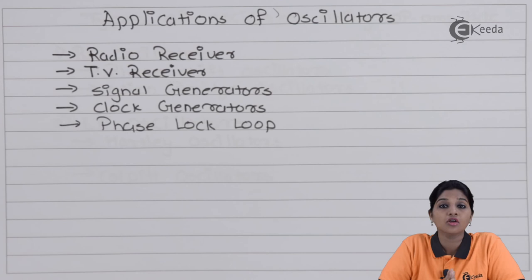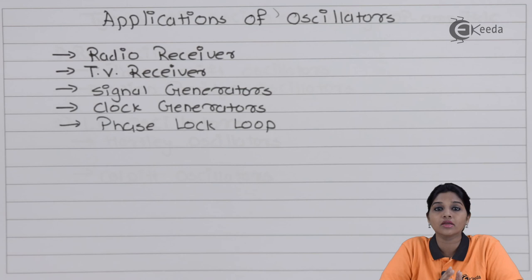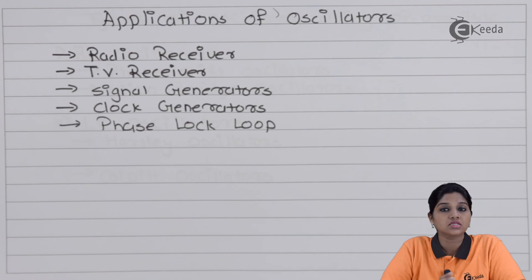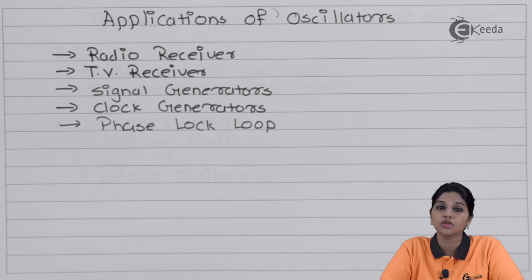So this is what Barkhausen's criteria and the principle of working of an oscillator circuit are about. Barkhausen's criteria consists of two conditions that must be satisfied by an amplifier circuit to work as an oscillator: first, the total phase shift around the loop must be 0 degrees, 360 degrees, or an integral multiple of 360 degrees; and second, the magnitude of loop gain — |Aβ| — must always be greater than or equal to unity. When an amplifier circuit with positive feedback satisfies both these conditions, the circuit can be used as an oscillator.